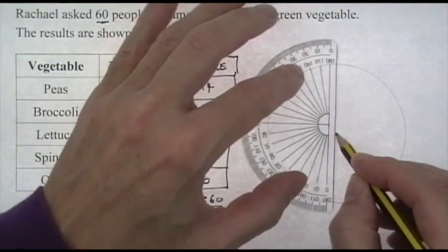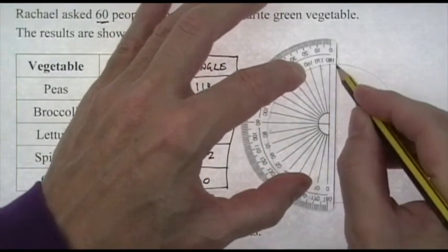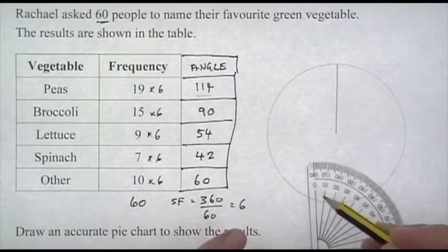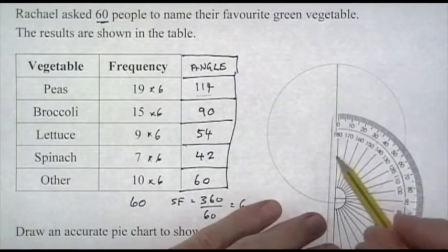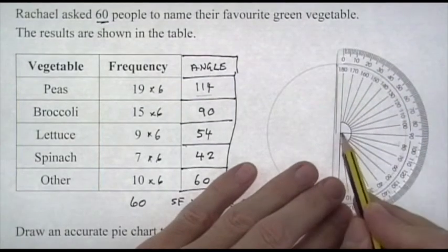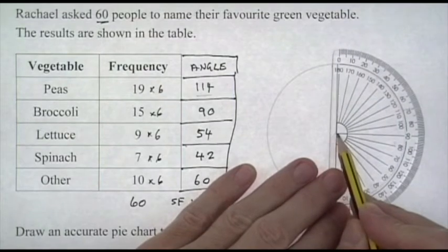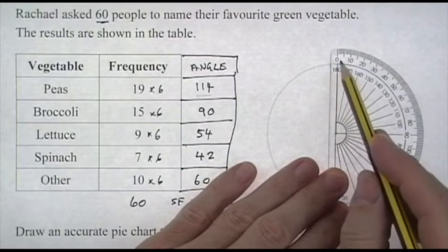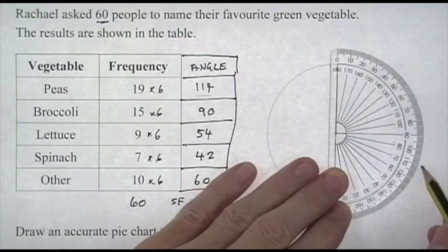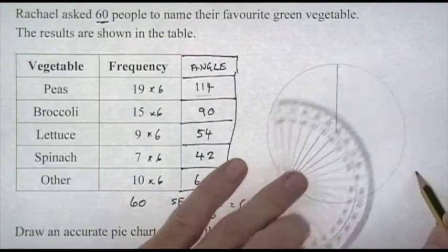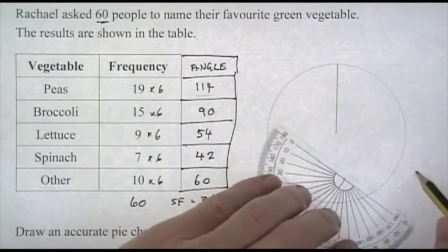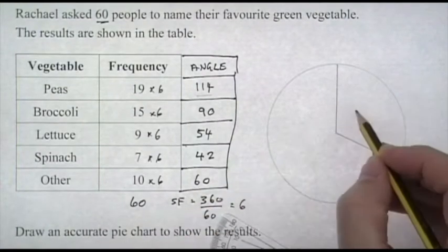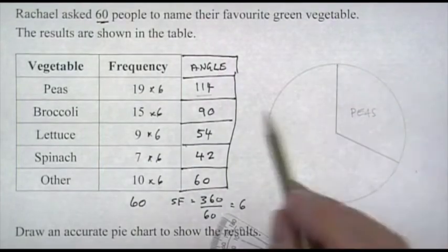The first angle is 114 degrees. Get the center of the protractor and put it on the center of the circle, point the zero straight up along the line you've just drawn, then count out to 114. Put a little mark on the paper. Don't move your pencil—keep it still until the protractor is in place, then draw your 114-degree angle. That was for peas. Next one is 90 degrees for broccoli. Again, center the protractor, line up the zero along the line you've most recently drawn, and mark out 90 degrees. Press down with your pencil, do not move it until your protractor is in place, and draw your line.